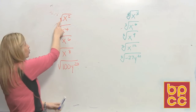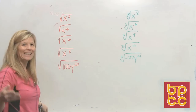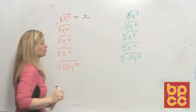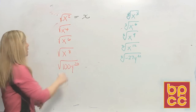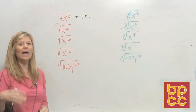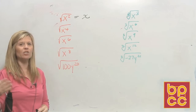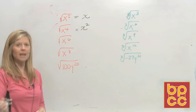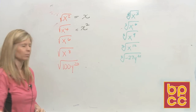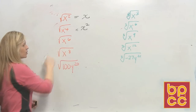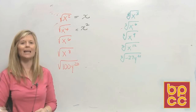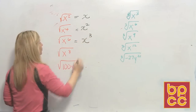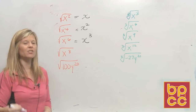When I ask you the square root of x squared, I'm asking you what letter times itself is x squared? And you would say it's x. If I ask you the square root of x to the fourth, what letter times itself is x to the fourth? That is x squared, because x squared times x squared makes x to the fourth. When I ask you the square root of x to the sixth, what letter times itself is x to the sixth? That is x cubed.